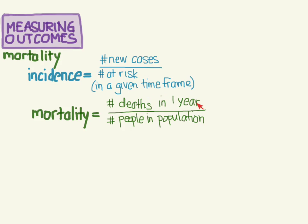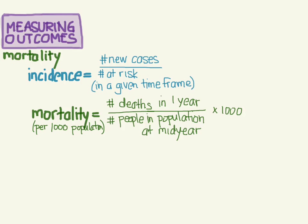The time frame is usually one year, so we count the number of deaths in a year. We measure the number of people in the population usually halfway through the year, because populations can change over time, so we pick the mid-year point. Since these numbers tend to be small — deaths in a year are much smaller than the total population — we often multiply by 1,000 to get easier-to-understand numbers, sometimes 10,000 or 100,000. We call this mortality per 1,000 of the population.